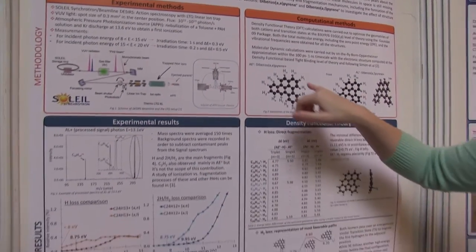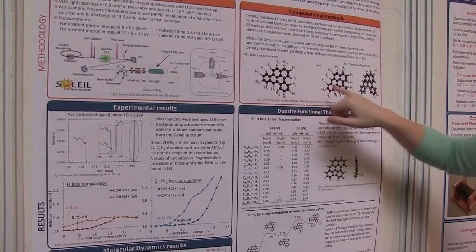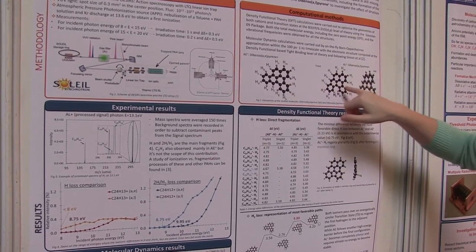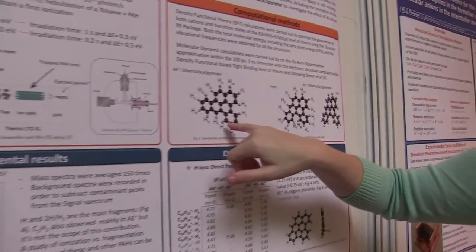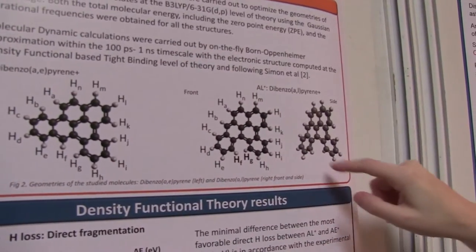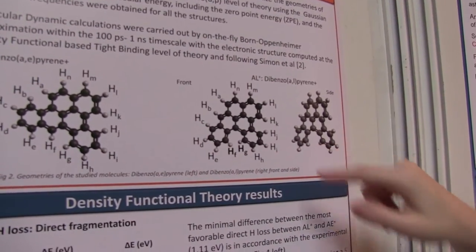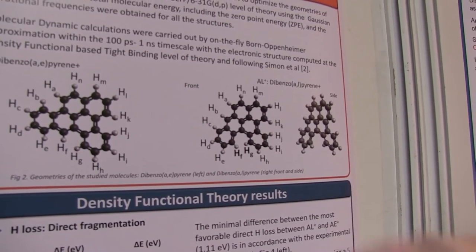We chose these two molecules because even though they have the same number of carbons and hydrogens, one is planar while the other is not.